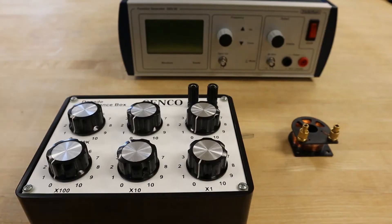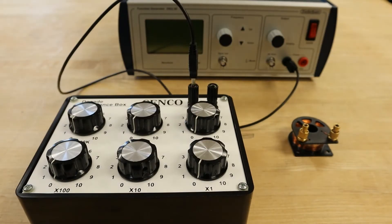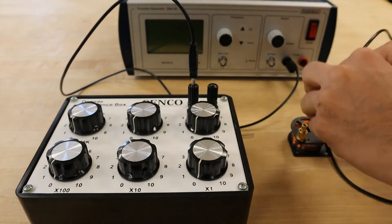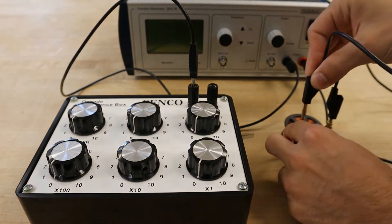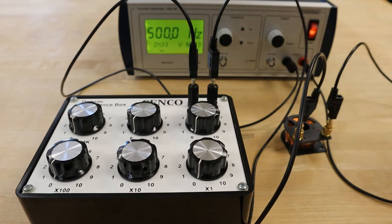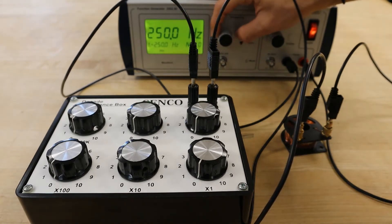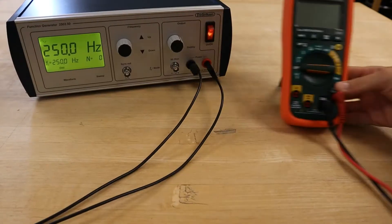Now we can construct a simple circuit by connecting our resistor, inductor, and function generator. Initiating the function generator, we will set the device to produce a sine wave with a frequency of 250 Hz.